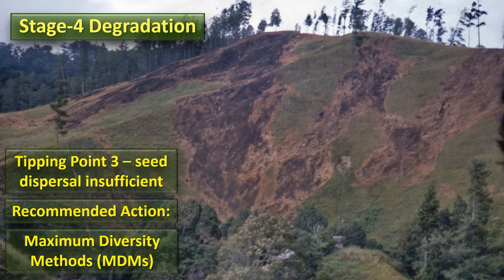The framework species technique depends on natural seed dispersal to recover biodiversity. Tipping point three is reached when seed dispersal no longer operates efficiently, either because there are no seed sources left in the landscape or because hunting has extirpated the seed-dispersing animals. Under those circumstances, instead of planting just 20 to 30 framework tree species, you have to plant nearly all the tree species that comprise the original reference forest ecosystem — this is called maximum diversity methods, or MDMs.